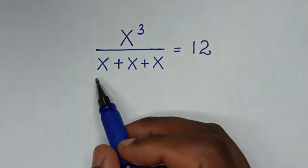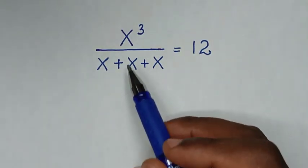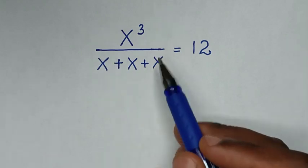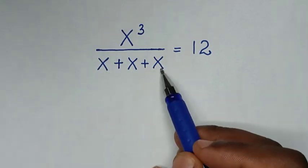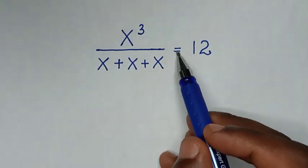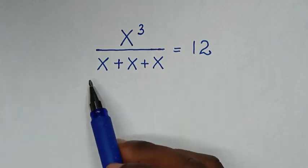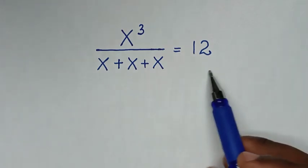Hello, you're welcome to solve this math problem which is x power 3 over x plus x plus x is equal to 12, to find the values of x from this equation.